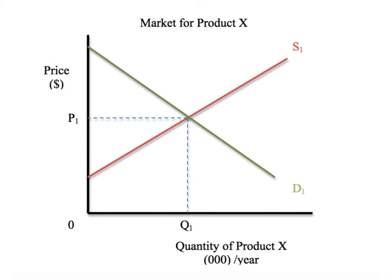The fundamental place where you start is almost always the same. So you read a question and say, 'okay, this is a supply and demand microeconomic question — draw the graph.' There are 11 things to include: 1) price, 2) the currency, 3) the initial equilibrium price P1, 4) zero on the axis, 5) Q1 the original equilibrium quantity, 6) the quantity of product X, 7) the unit (in this case, thousands), 8) the time frame (in this case, year), 9) the demand curve labeled D1, 10) the supply curve labeled S1, and 11) the title of the graph. That is the Rule of 11.